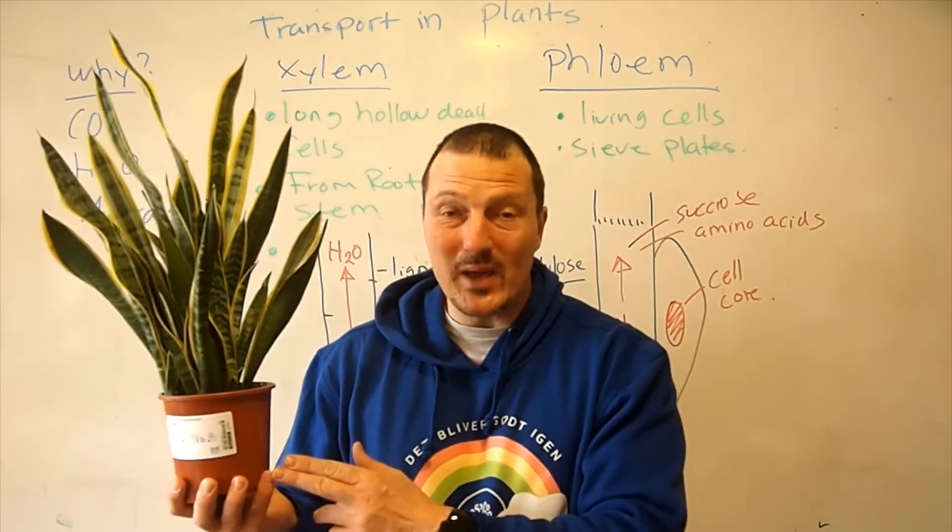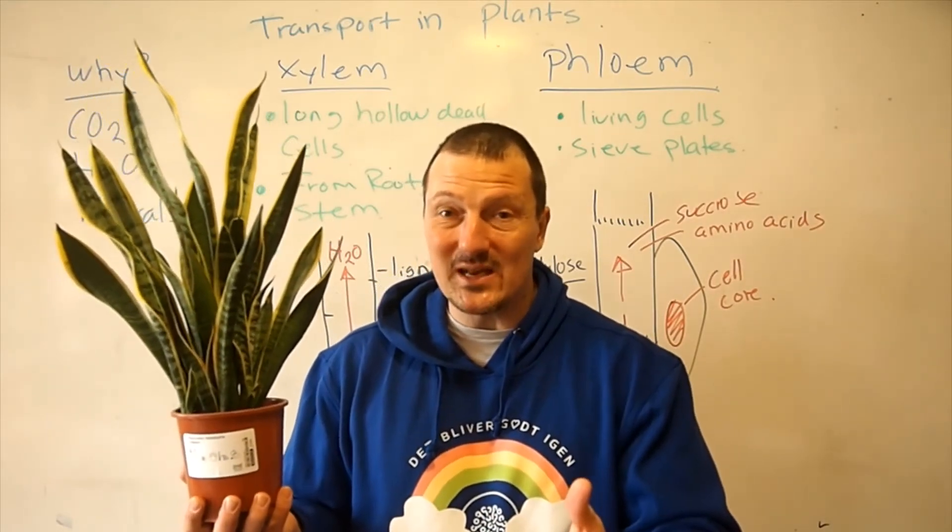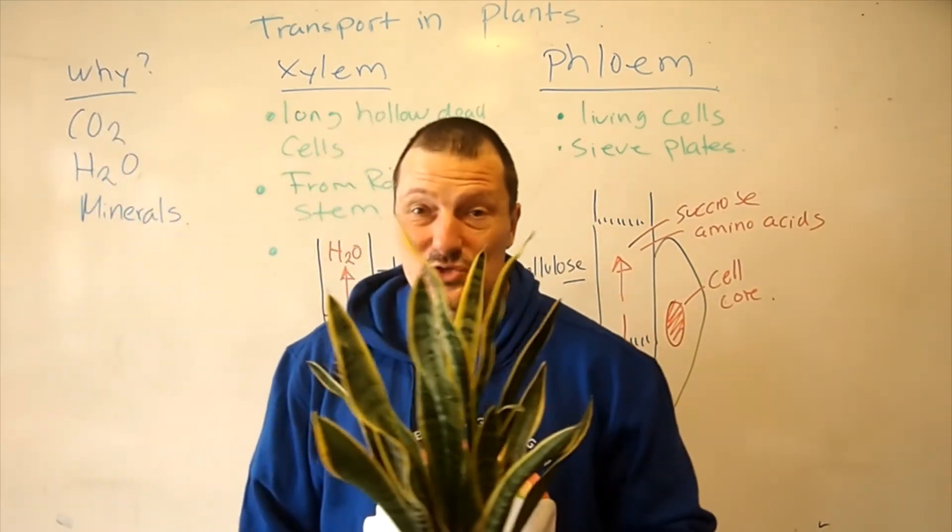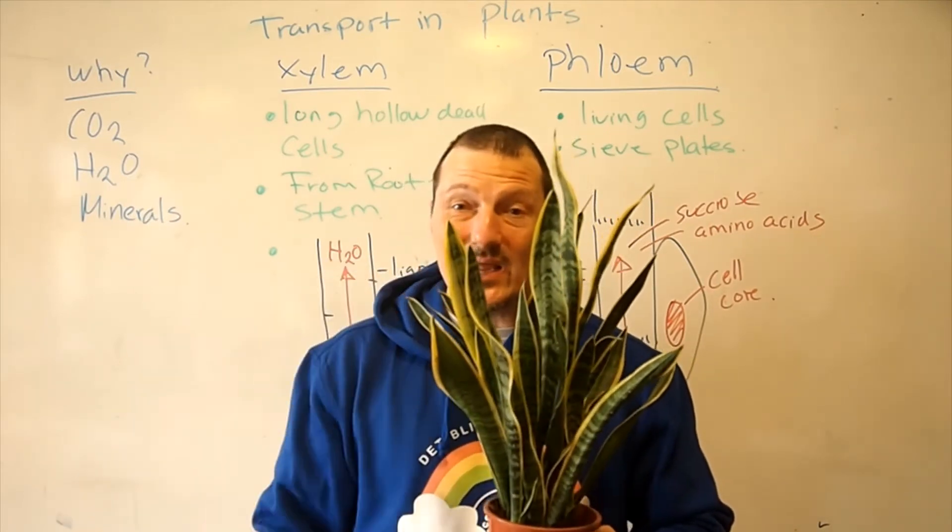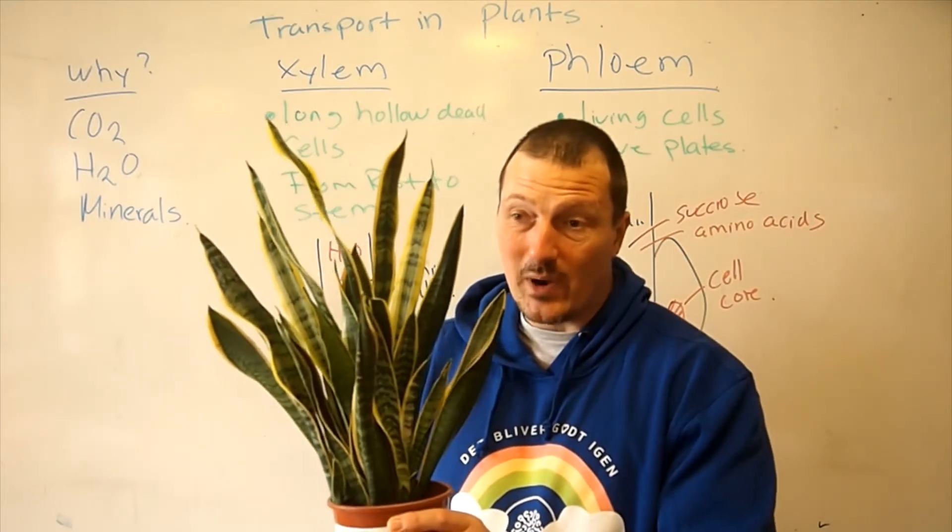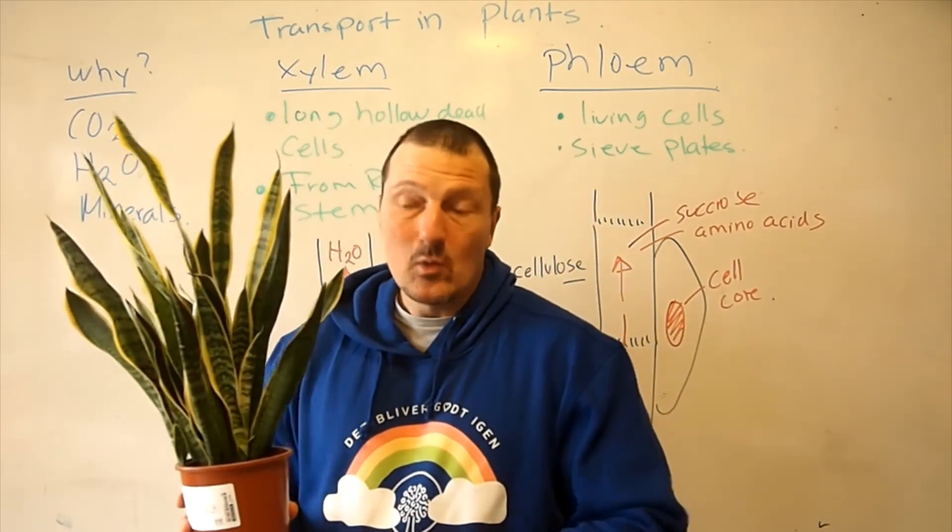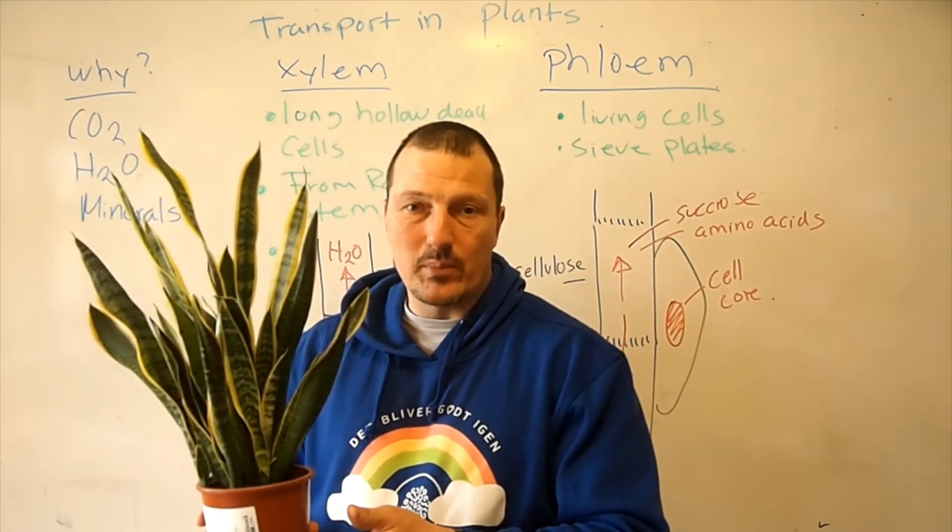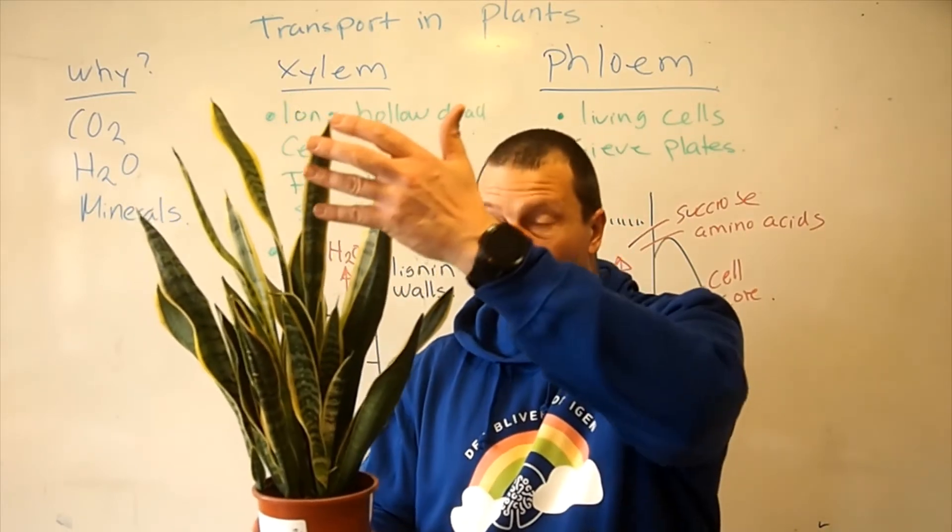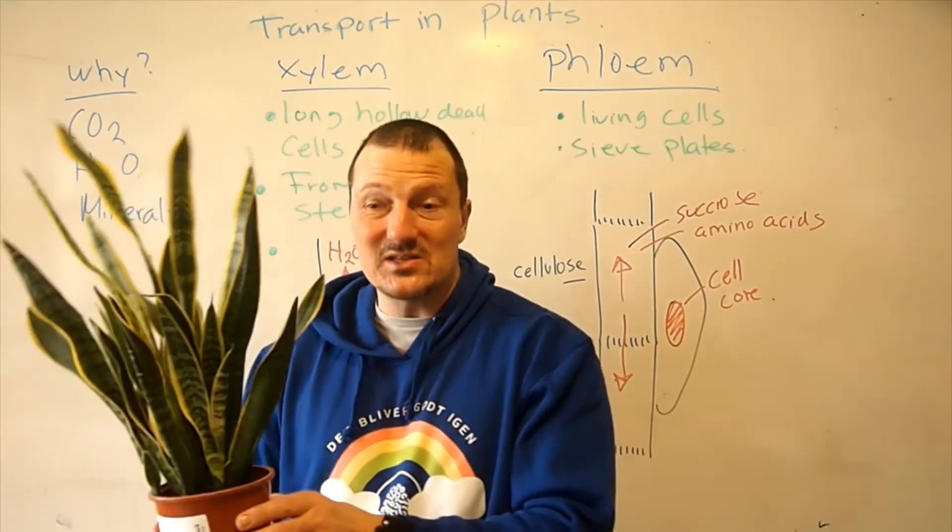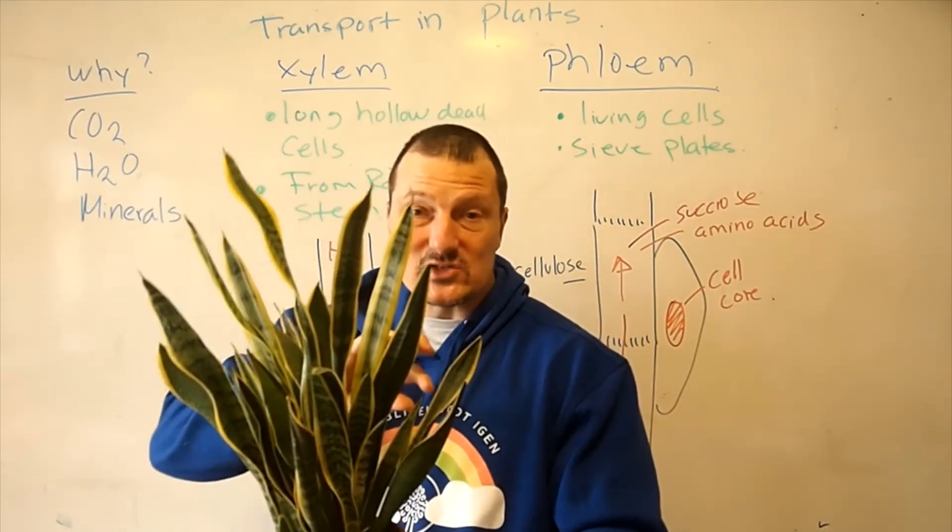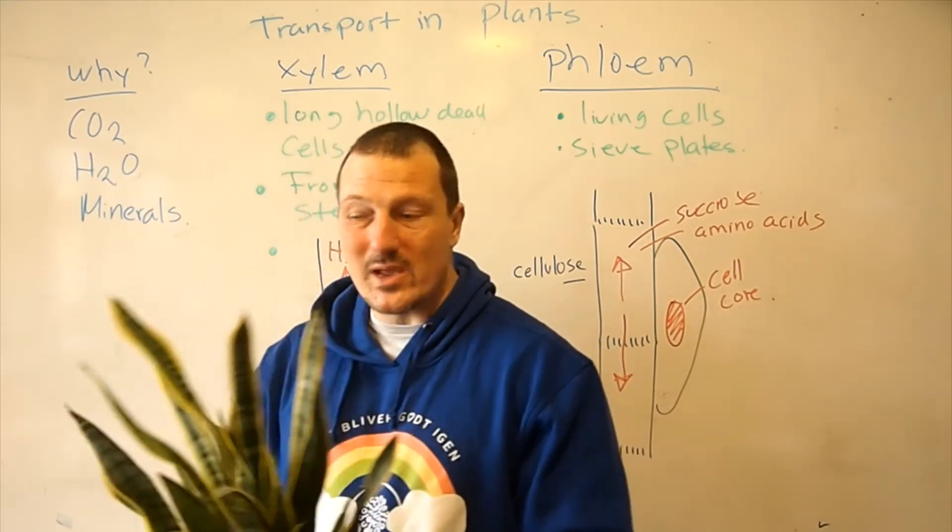So a plant like this needs to be able to transport the different things it needs around its tissue. For a plant like this, it needs CO2 for photosynthesis that it can take up over the leaves. It needs water, which is taken up by the roots, and it needs different minerals, which is also usually taken up by the roots. So it needs to be able to transport water from the roots up to the leaves, and in some cases transport the end products like amino acids and sugar somewhere else.